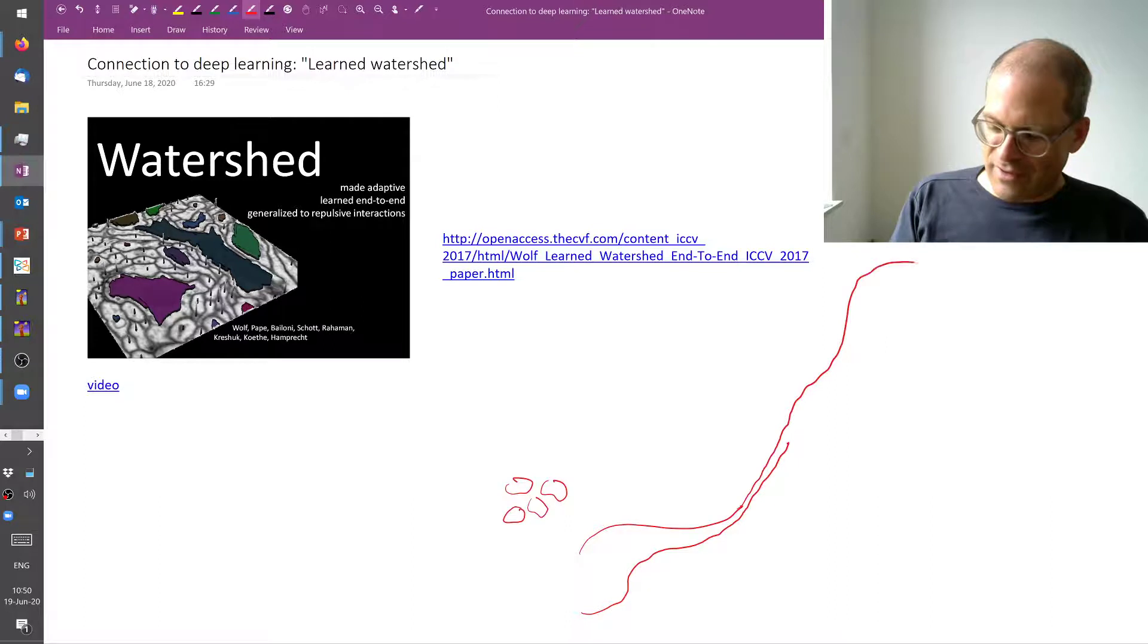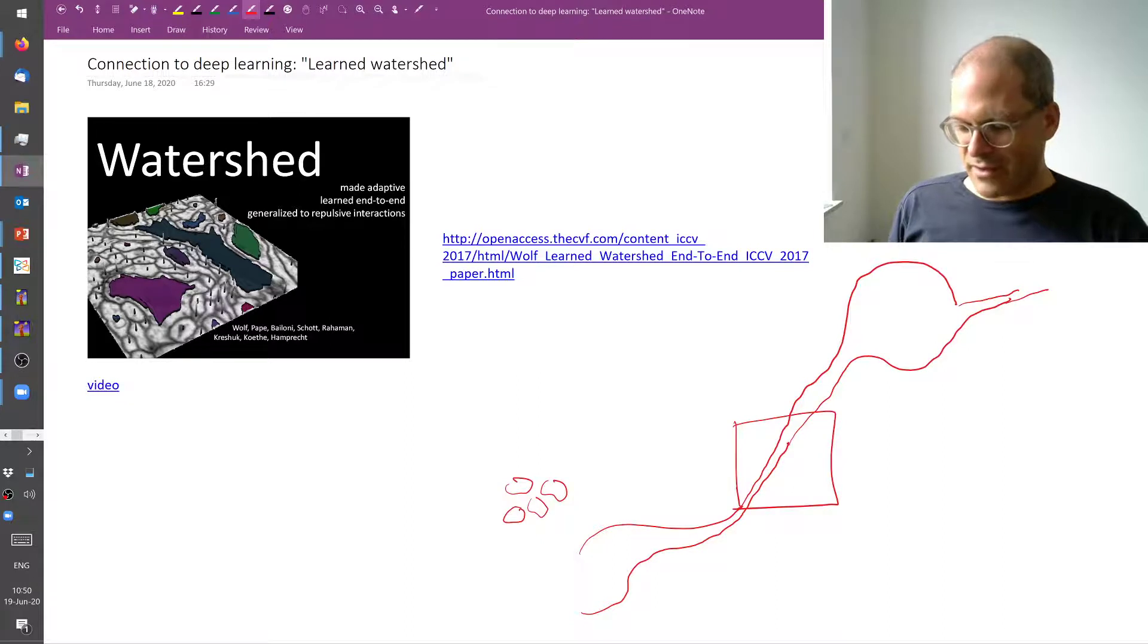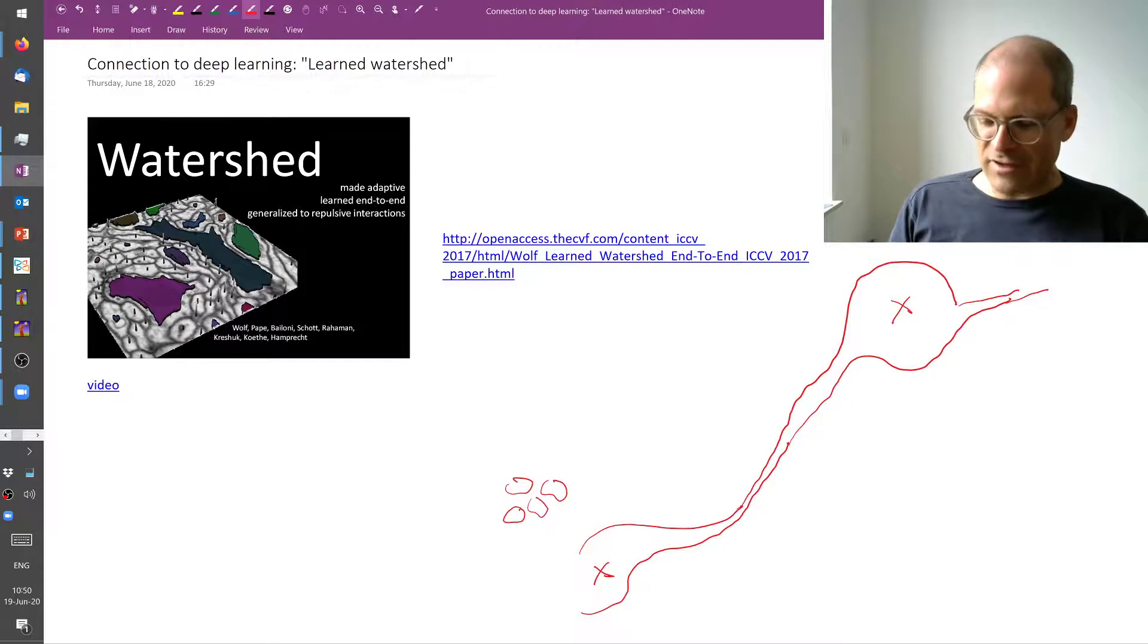And then at some point it becomes thick again. So if you now think of a neural network, which maybe has a field of view this big, probably this neural network will be able to automatically put a seed here. But presumably your neural network would also put a seed there. And it will be difficult for the neural network with its finite field of view to understand that actually this is one and the same object and that these seeds should belong to the same class.